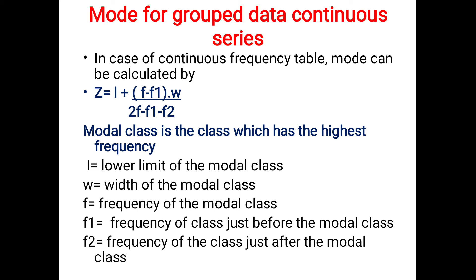The modal class is the class which has the highest frequency. L is the lower limit of the modal class. W is the width of the modal class — calculated as upper limit minus lower limit. F is the frequency of the modal class, F1 is the frequency of the class just before the modal class, and F2 is the frequency of the class just after the modal class.